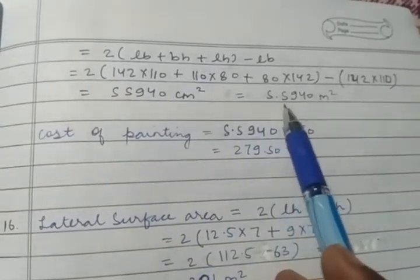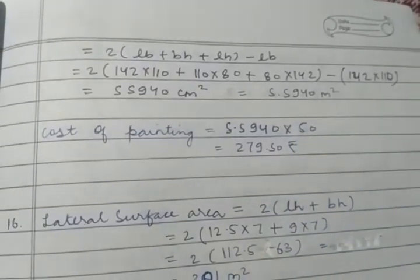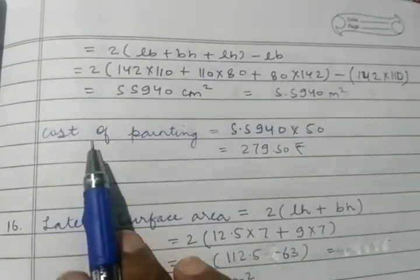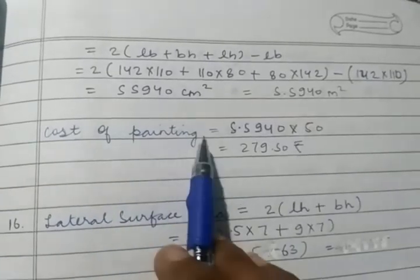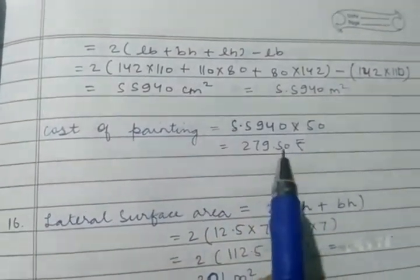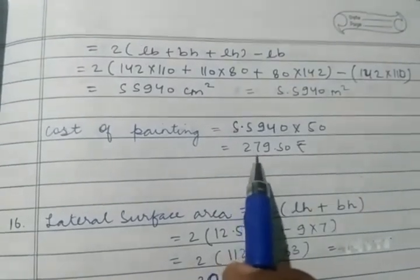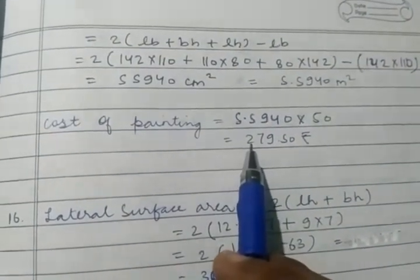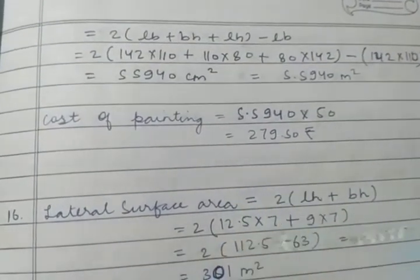Surface area is 5.5940 meters square. After that cost of painting is going to be 5.5940 × 50 rupees, that comes out to be 279.50.